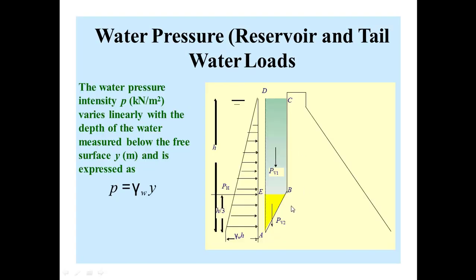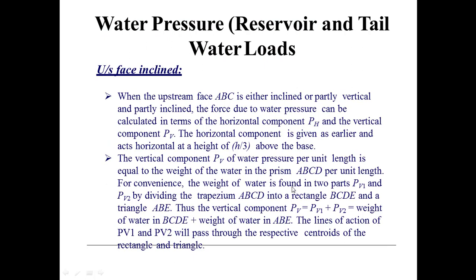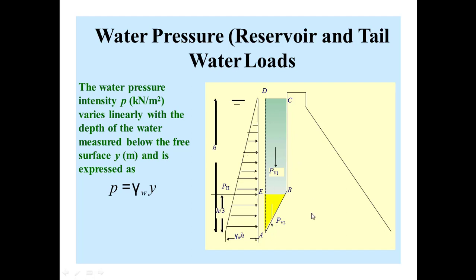As you can see, for the prism ABCD, the weight of the water in this prism will equal the area multiplied by the unit weight of the liquid. For convenience, the weight of the water pressure is found in two parts, PV1 and PV2, by dividing the trapezium ABCD into rectangle BCDE and triangle ABE. The area of the rectangle is found by multiplying height and width, then multiplied by the unit weight of the liquid to get the total weight per unit length.